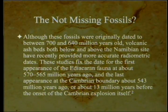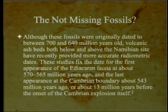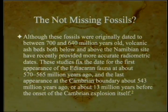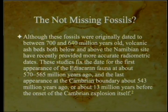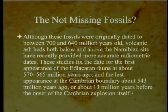Although these fossils were originally dated to between 700 and 640 million years old, volcanic ash beds from Namibian sites have recently provided more accurate radiometric dates, fixing the first appearance of the Ediacaran fauna at about 570 to 565 million years ago and the last appearance at about 543 million years ago — meaning they went extinct during the Cambrian, or about 13 million years before the onset of the Cambrian explosion itself. So by conventional chronology, there's a 13-million-year time gap between the last of the Ediacaran fauna and the first of the Cambrian.